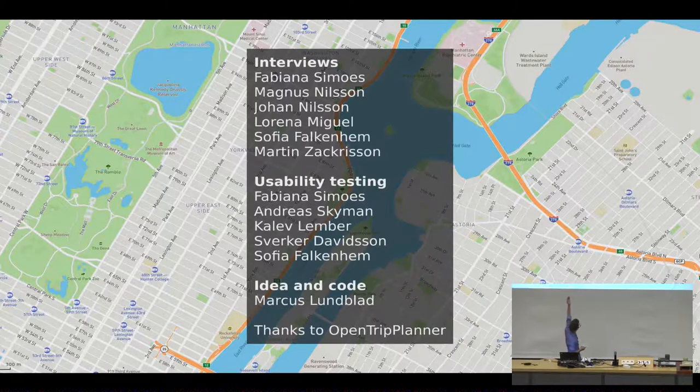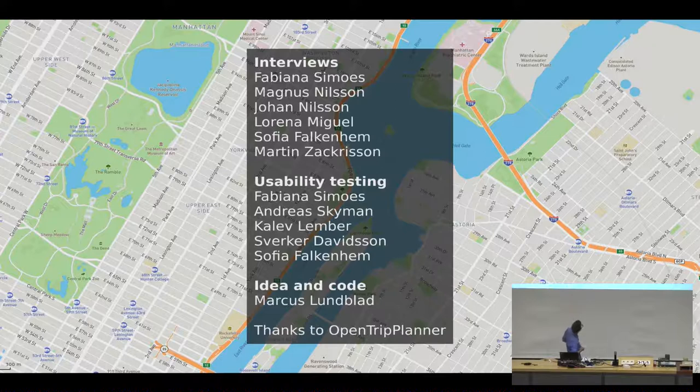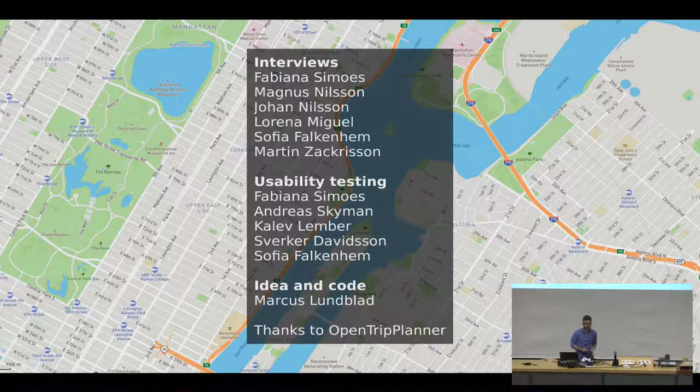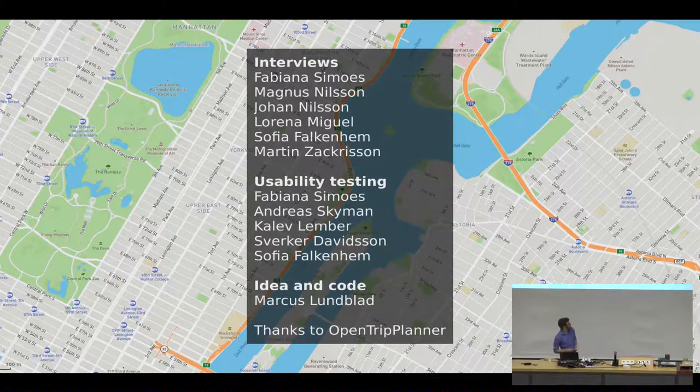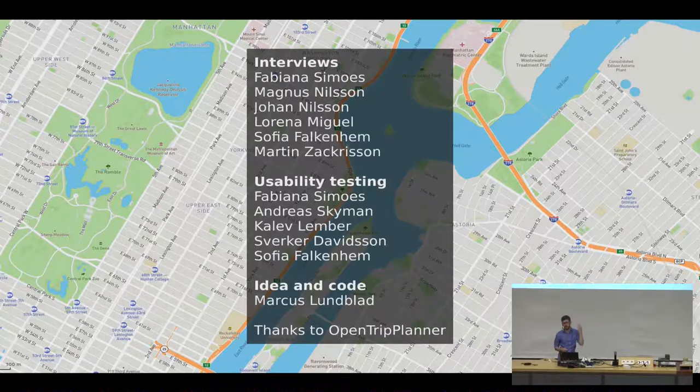So, these are all the people that helped me. These people did the usability testing. Marcus implemented it. And also OpenTrip Planner, which is the library that we use for the actual behind the scenes. So, in some sense, you could say a team of 11 people made this, right? It wasn't just two people. It was 11 people.